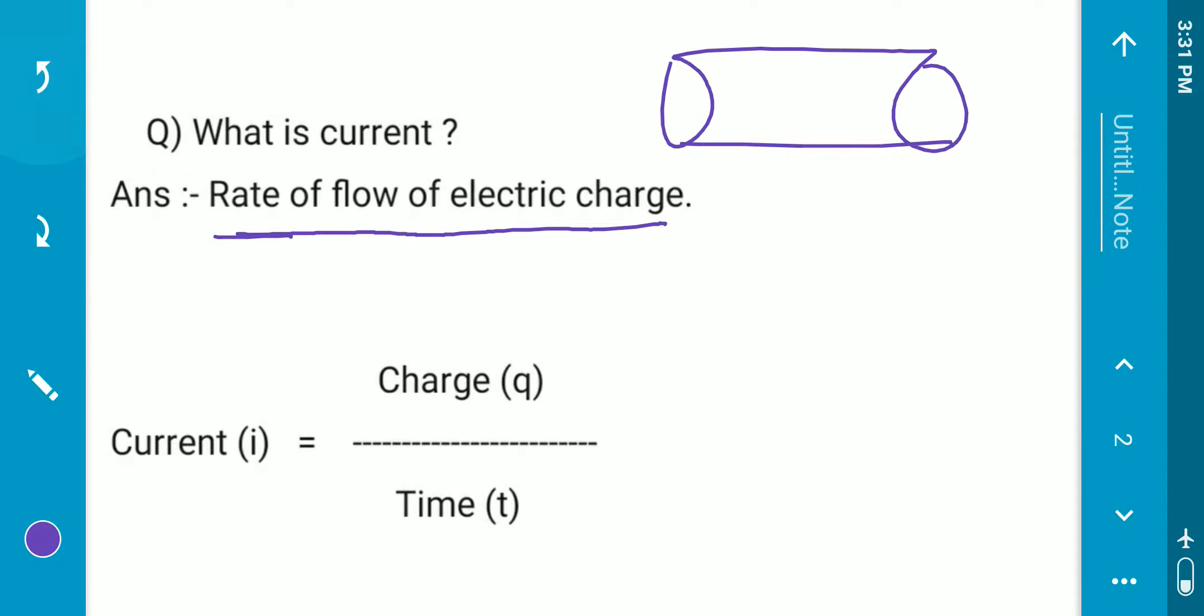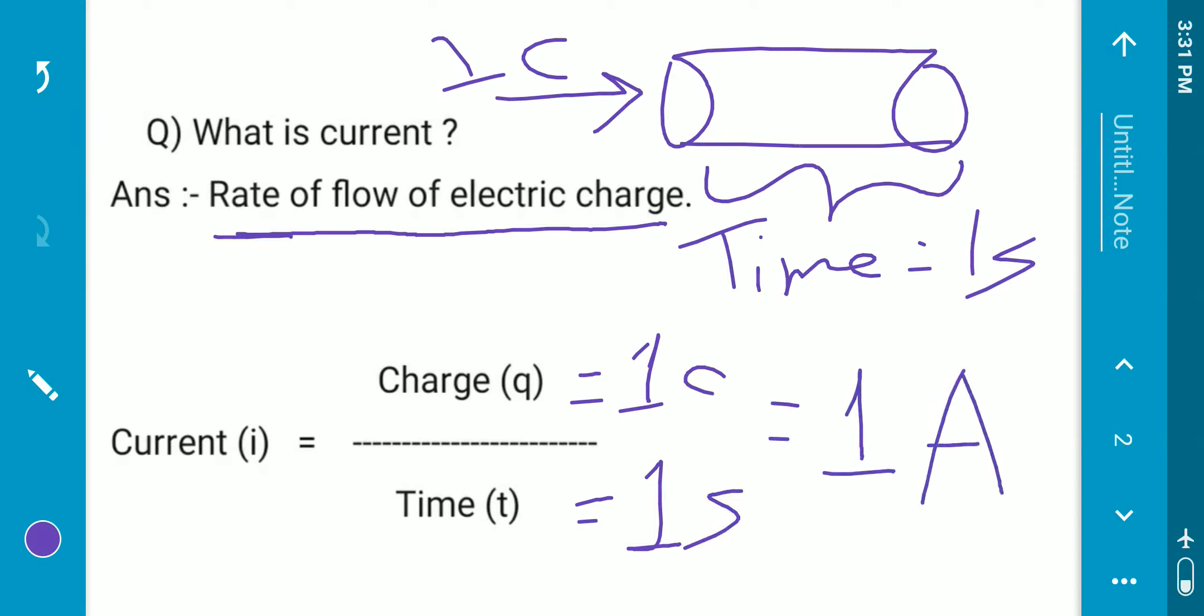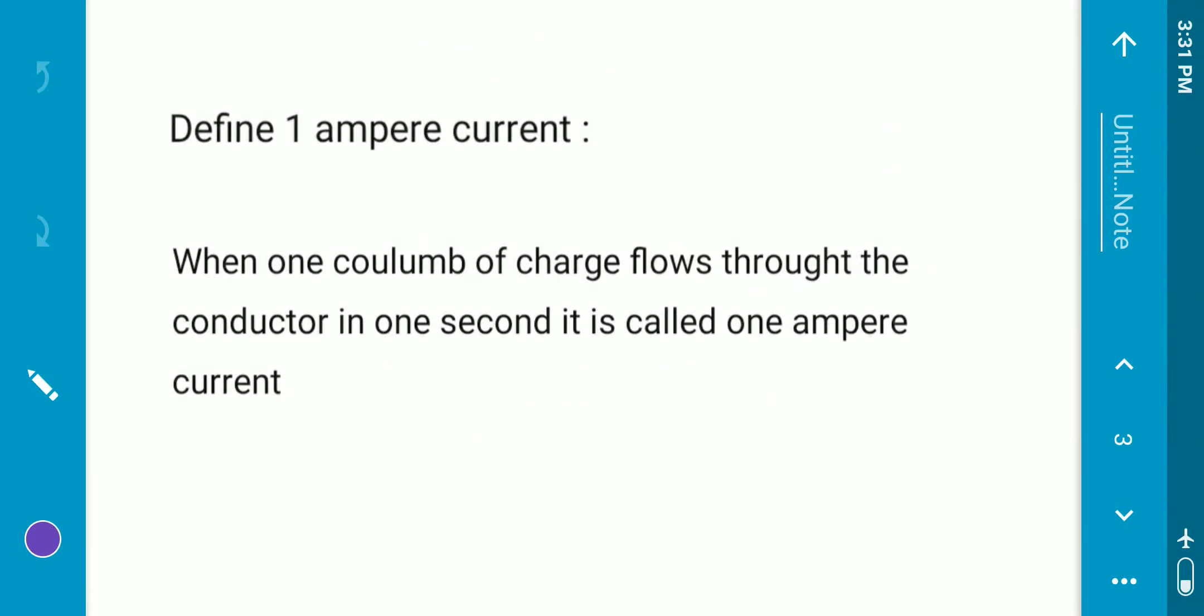Now if the charge flowing from the conductor is 1 Coulomb, what is the amount of current? Charge flowing 1 Coulomb. Here the charge is 1 Coulomb and the time taken is 1 second. Then 1 divided by 1 equals to 1 ampere. This is how we define 1 ampere current.